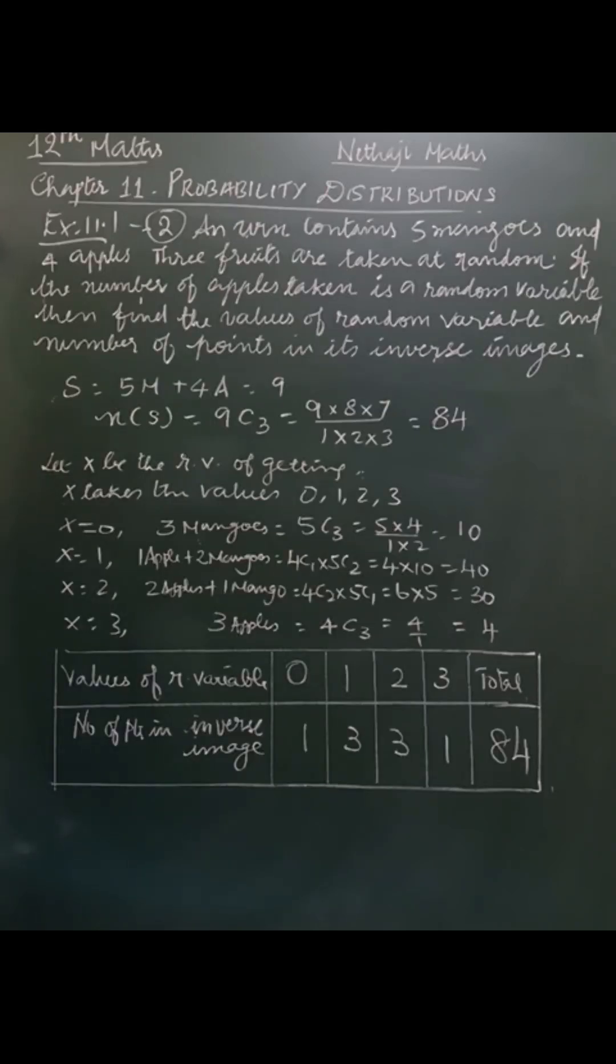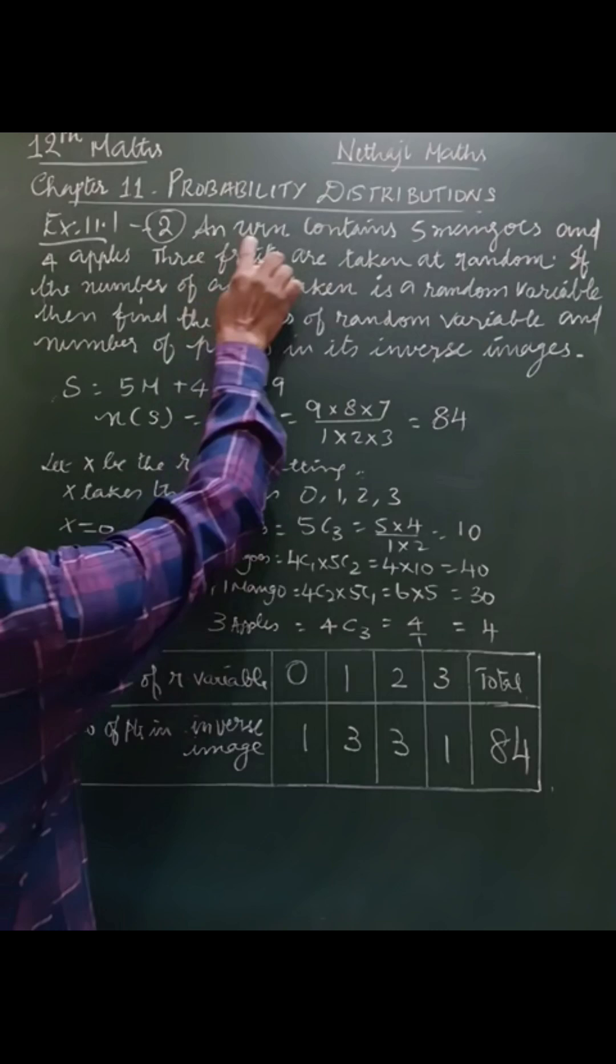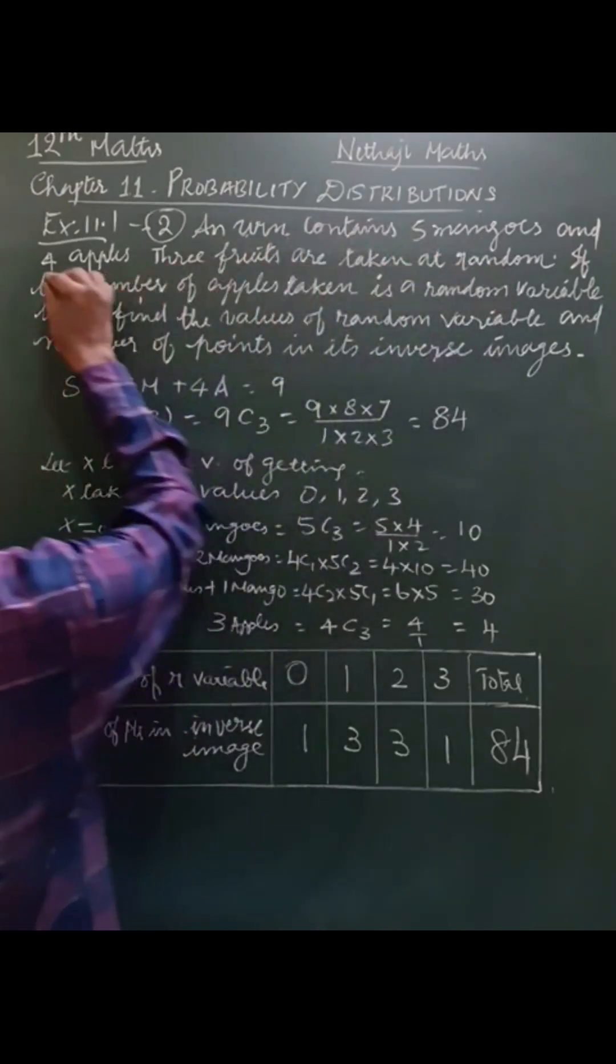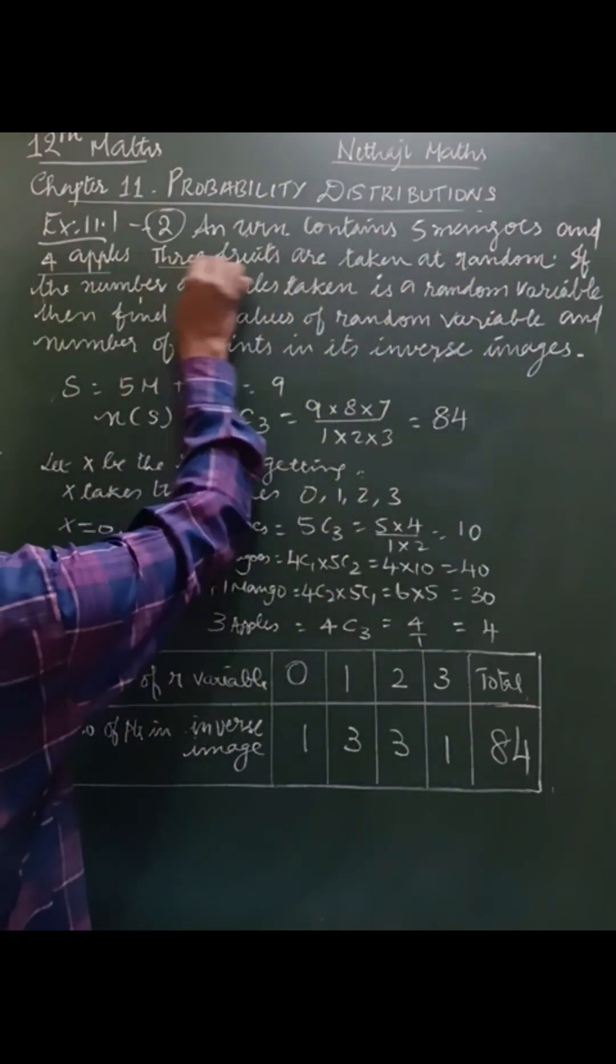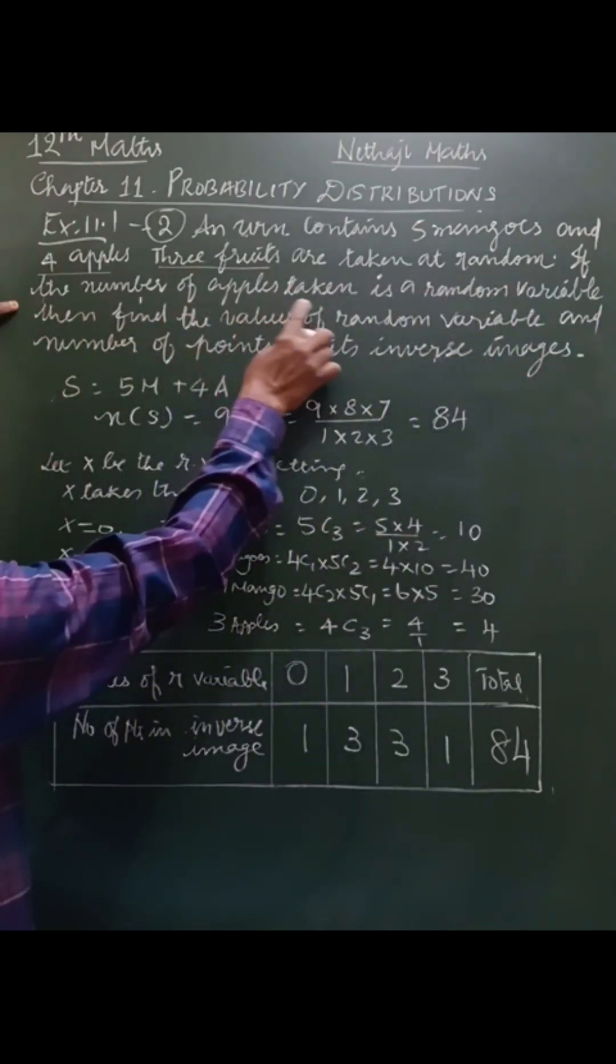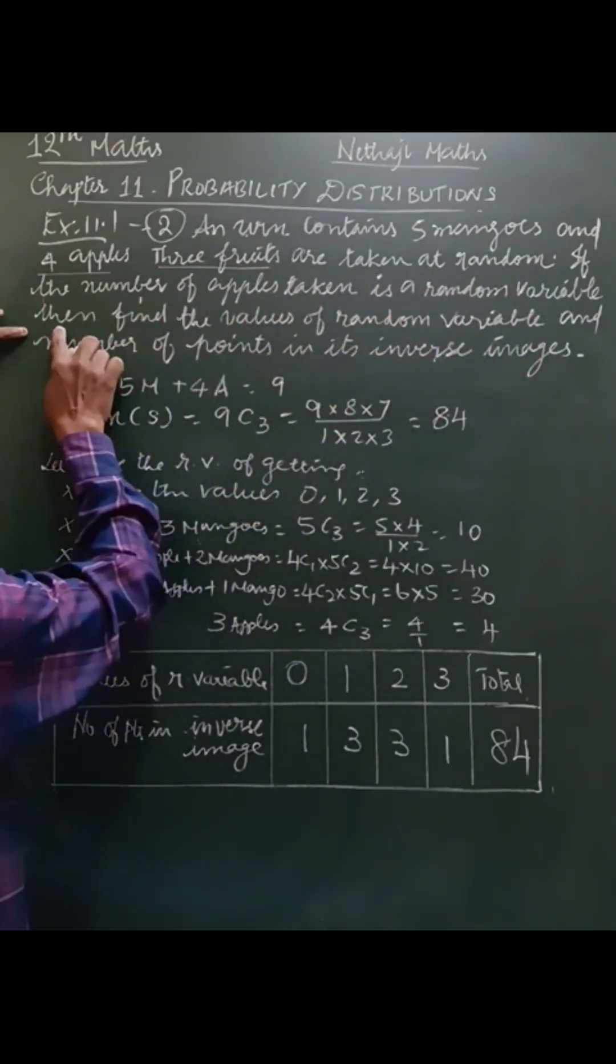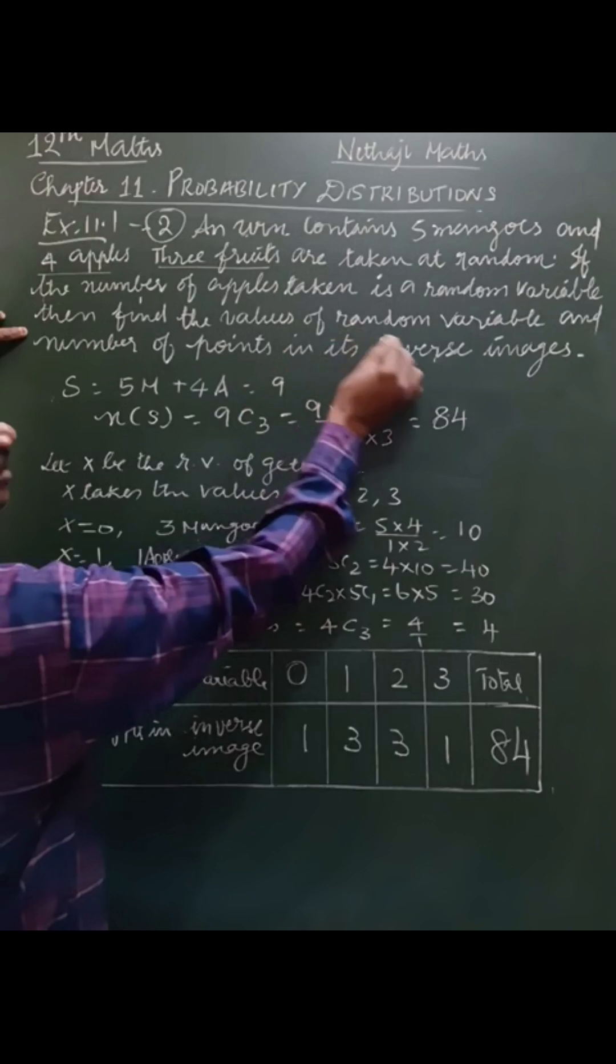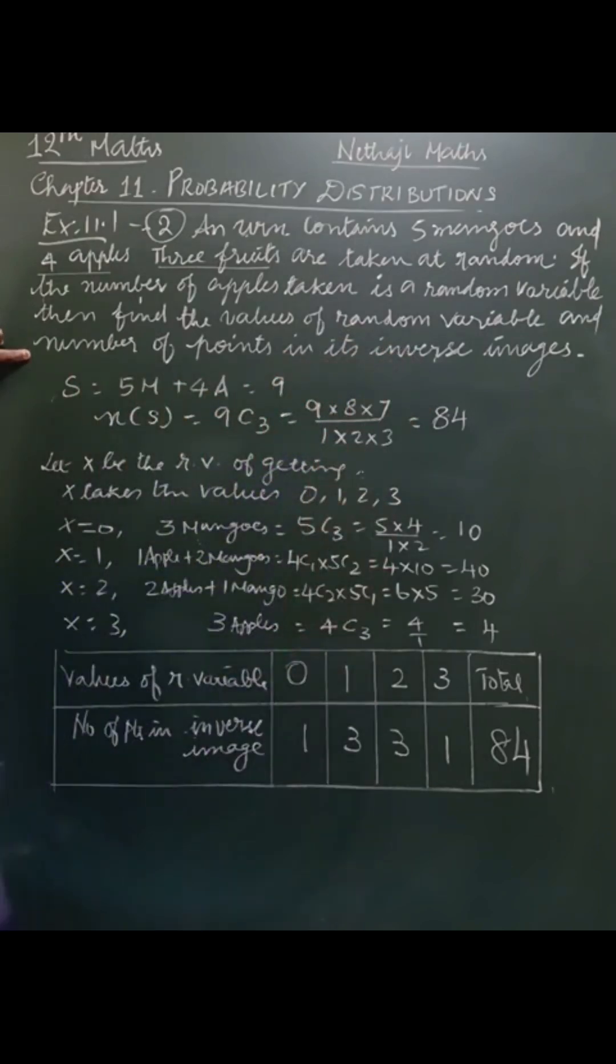Dear 12th standard students, in this video we are going to learn the second sum from exercise 11.1. The question is: an urn contains 5 mangoes and 4 apples. 3 fruits are drawn at random. If the number of apples taken is a random variable, then find the values of random variable and the number of points in inverse images.